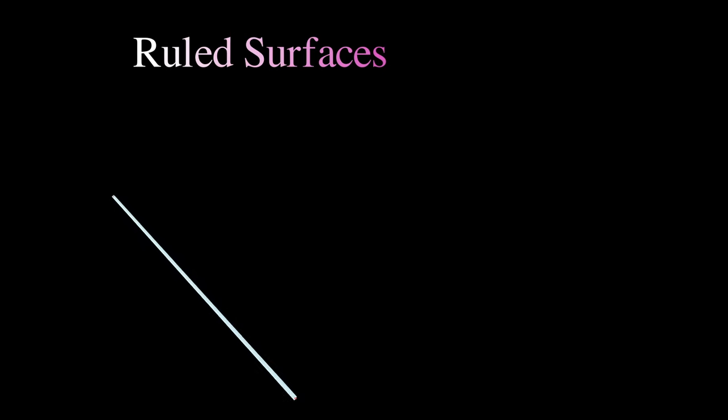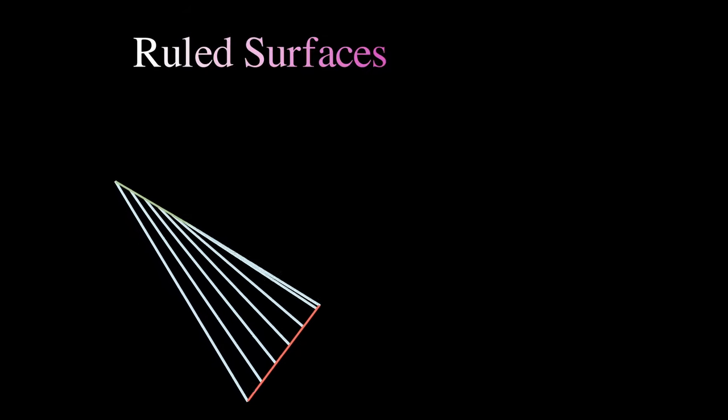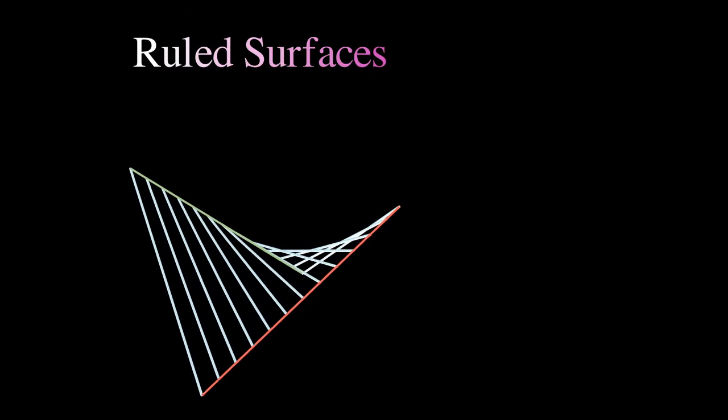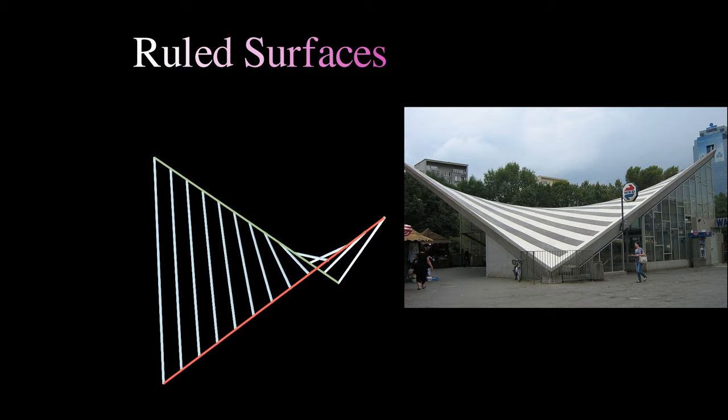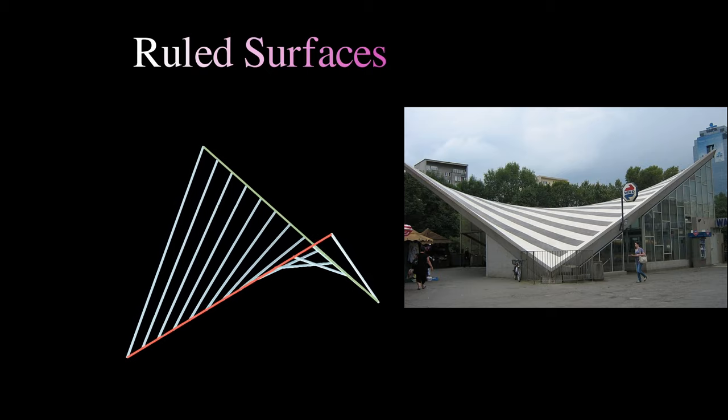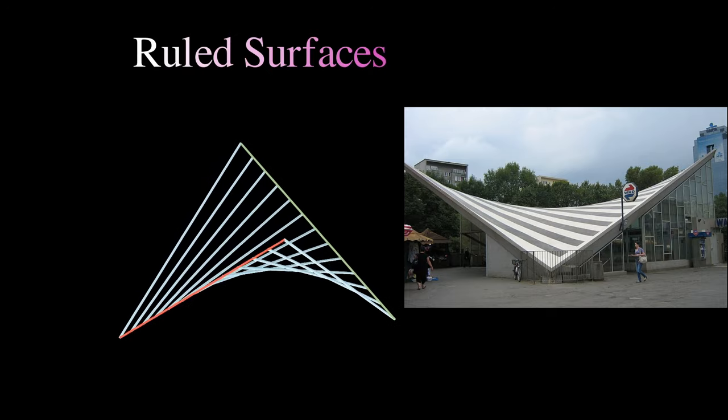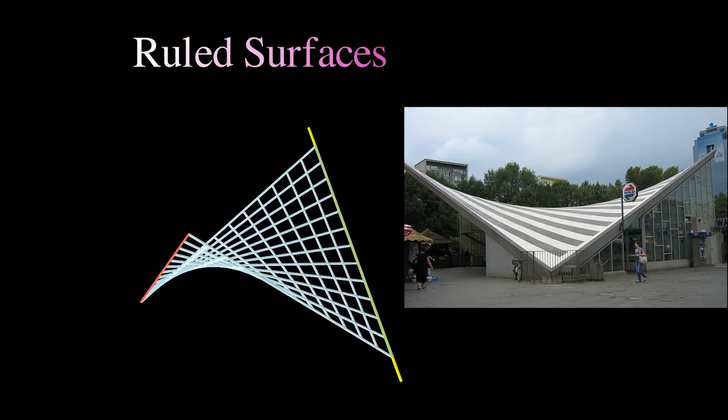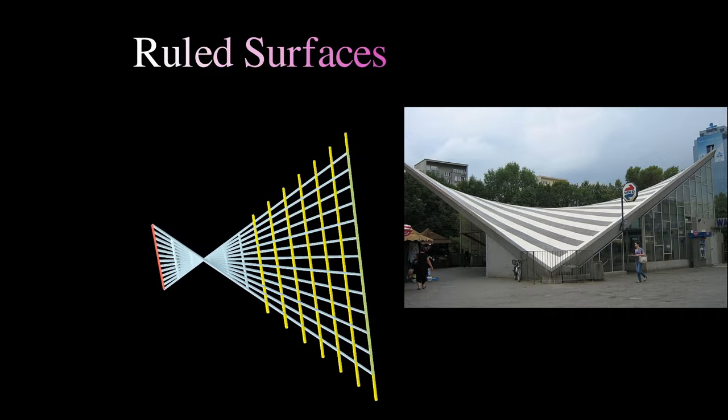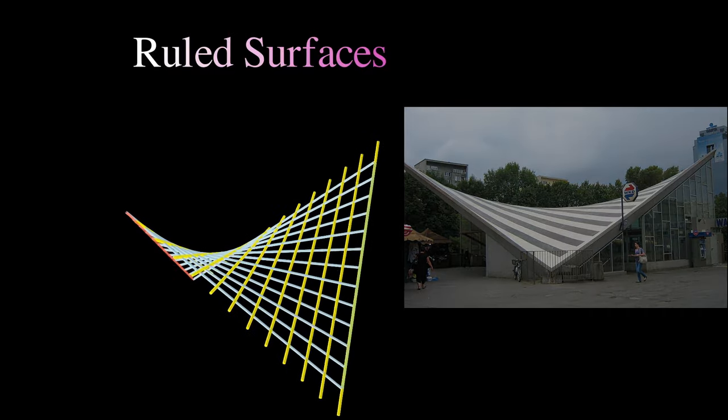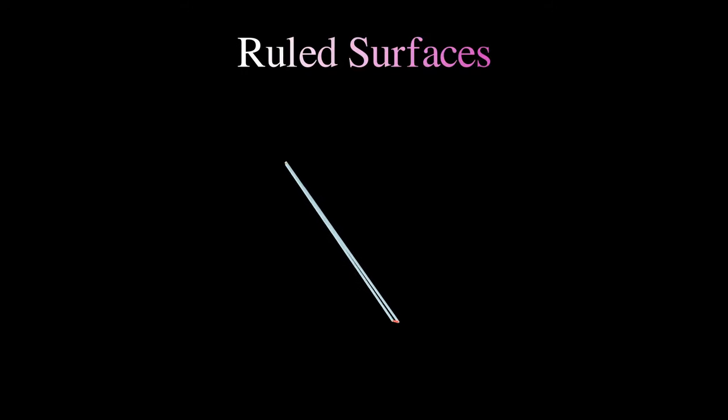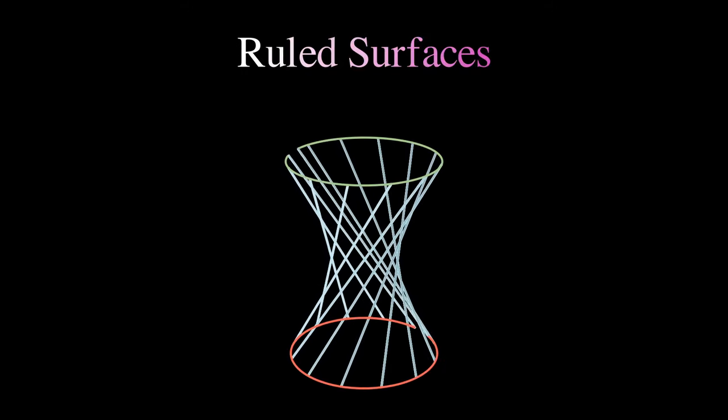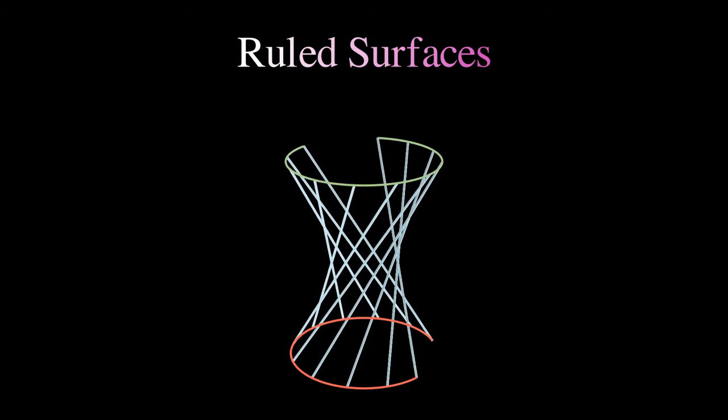A great example of a ruled surface being used in architecture would be in the roof of the Warsaw Okada railway station in Poland. It resembles this beautiful ruled surface called a hyperbolic paraboloid. And one of the two rulings of the hyperbolic paraboloid are actually outlined on the roof.